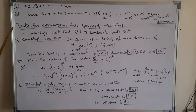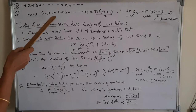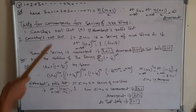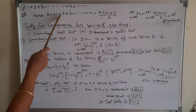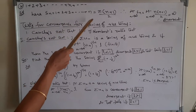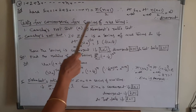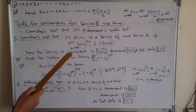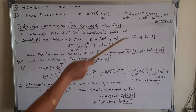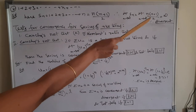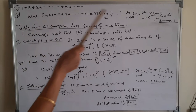The second example is 1 + 2 + 3 + ... + n + ... Here Sn = 1 + 2 + 3 + ... + n = n(n+1)/2. Applying the limit: limit as n→∞ of Sn equals limit as n→∞ of n(n+1)/2, which equals infinity. Therefore the given series is divergent.